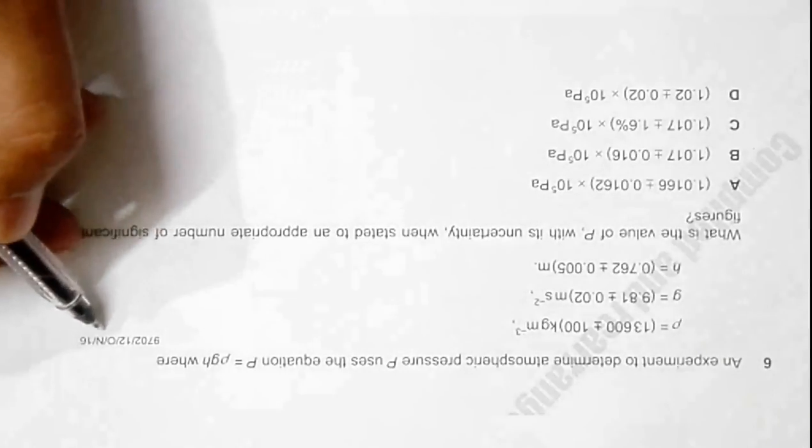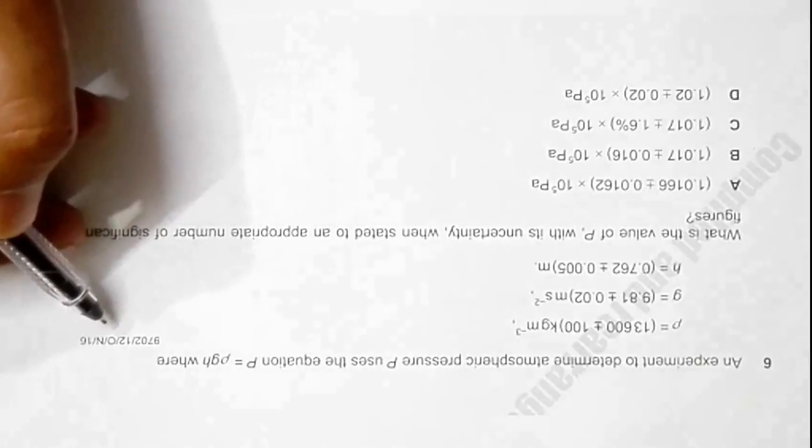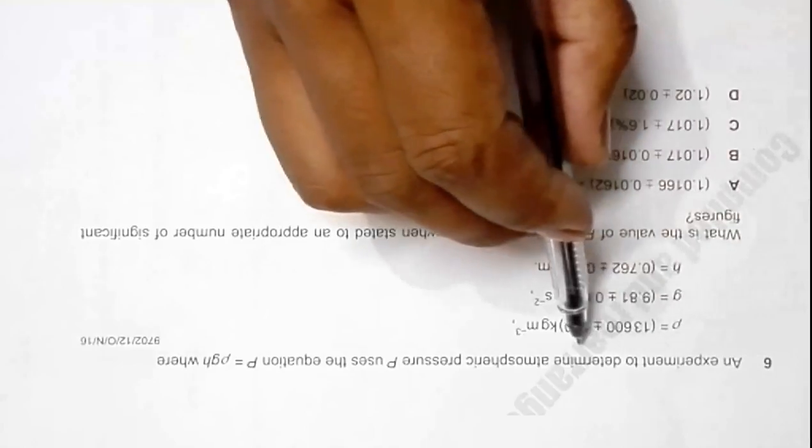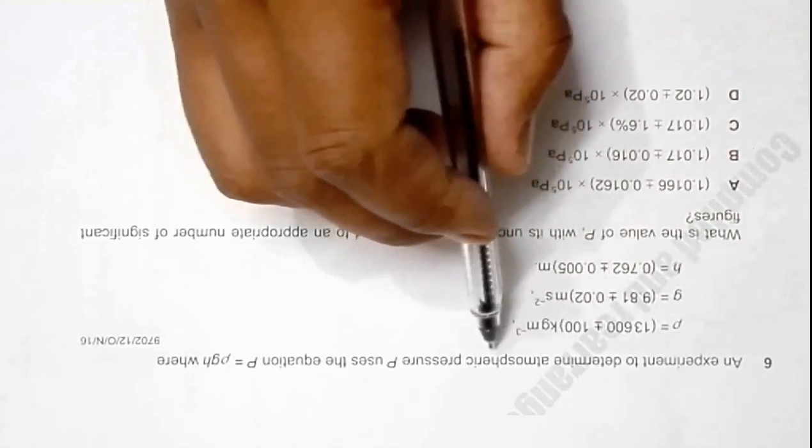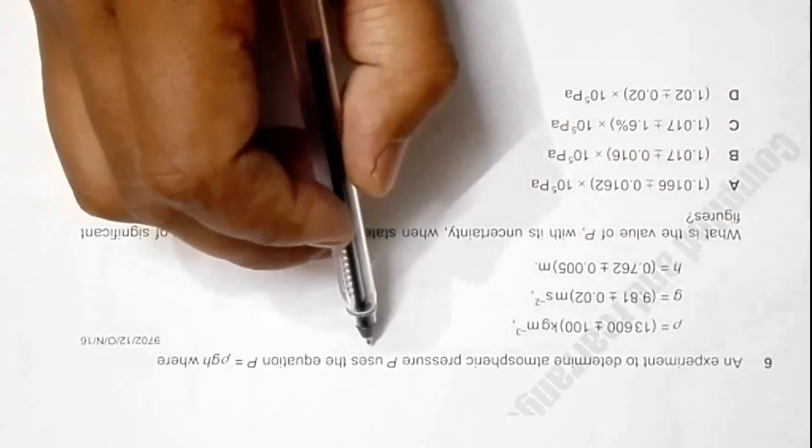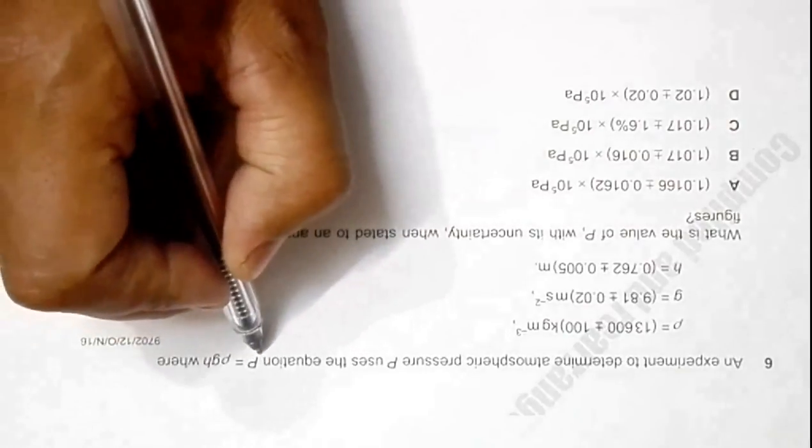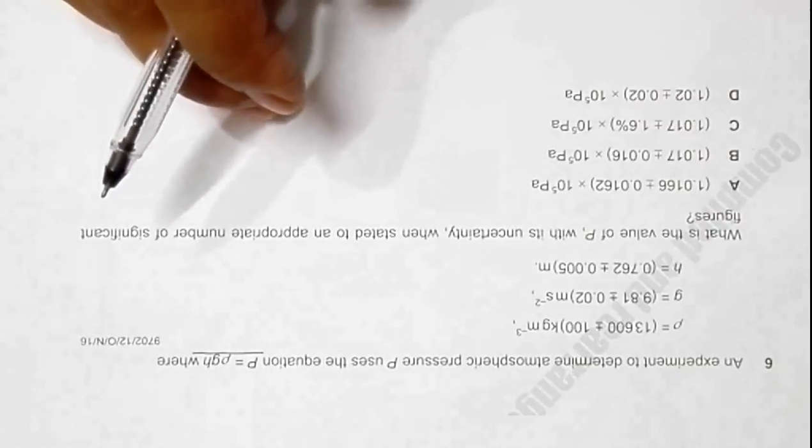This is the question from 2016 October November paper 12, question number 6. In an experiment to determine atmospheric pressure P, it uses the equation P equals ρGH, which is a standard equation where the different values are given. All values are given in SI units, so we don't need to worry about conversion.